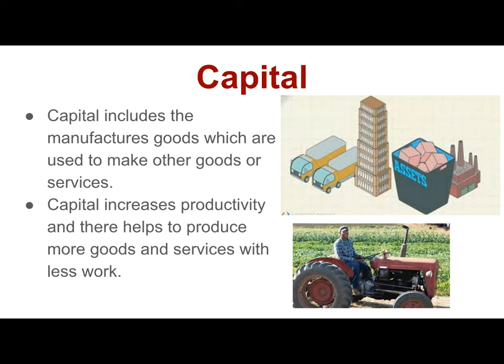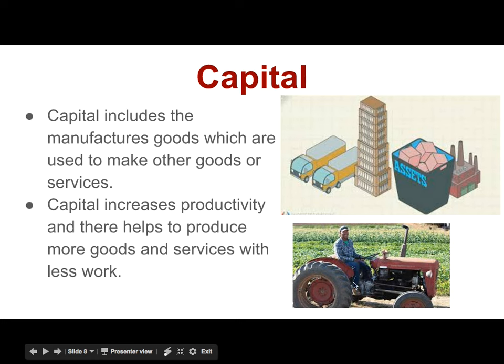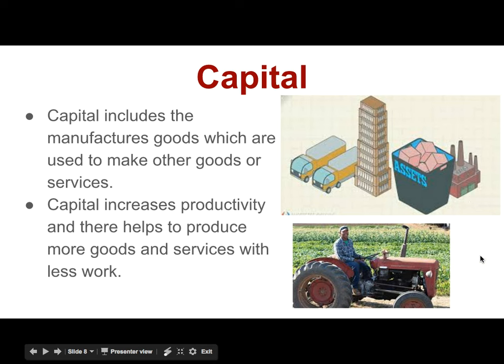Capital can be tricky. It includes manufactured goods which are used to make other goods or services. If something is made by man to help with the production of goods or services, then it's capital. Capital increases productivity — it helps produce more goods and services with less work. For example, the farmer's tractor would be capital: it's man-made and increases production. Capital also includes trucks, buildings, factories, and things you have in stock at your company.